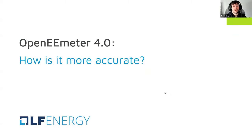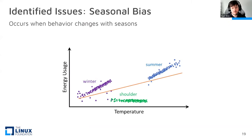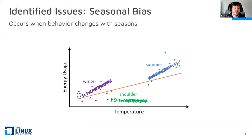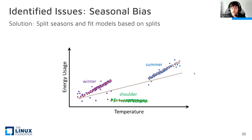To explain how we arrived at the accuracy improvements: imagine different seasonal behavior — winter in purple, shoulder months combining spring and fall in green, and summer months. The previous model would try to cut through the middle of all of that, underpredicting winter, overpredicting shoulder, and underpredicting summer. Our solution is to allow the model to split and create unique models for each of these seasons. How it chooses to do this will be explained shortly.